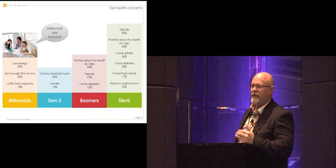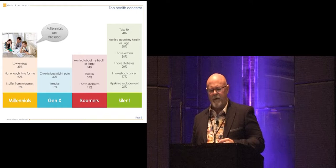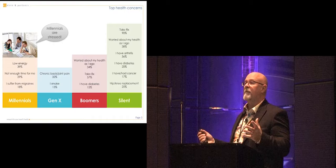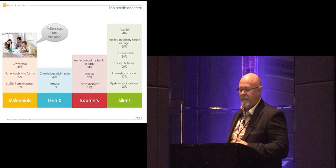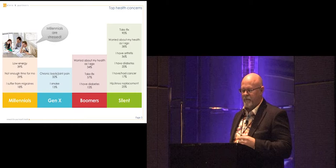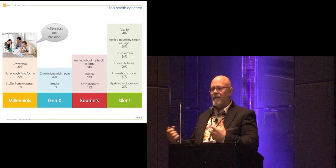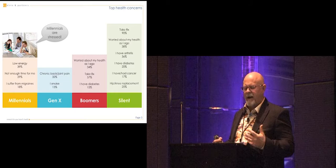And we also have a higher level of diabetes. And then the silent generation, our parents and grandparents, they're taking prescription drugs, almost all of them. It's really become better living through chemicals, as how the seniors are existing. I'm worried about my health as I age, of course. I have arthritis. I have diabetes. I have or have had cancer. And I have or have had hip and knee replacement. So there, obviously, things start to break as we get older. So most of these are very, not that surprising, except with the millennials.